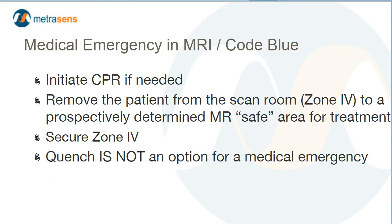In the event of a severe medical emergency, such as cardiac or respiratory arrest, the ACR recommends beginning CPR while removing the patient from Zone 4 to a prospectively determined MR-safe area for treatment. If the area is in Zone 3, the door to the scan room should be secured or locked so that responding non-MRI personnel cannot inadvertently enter Zone 4. It's important that the patient be removed from Zone 4 before responding non-MR personnel arrive. Quenching the magnet is not an option for a medical emergency.